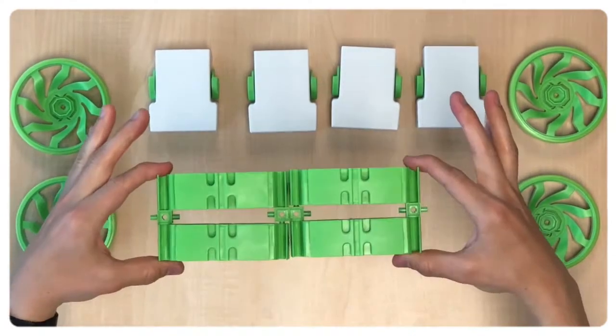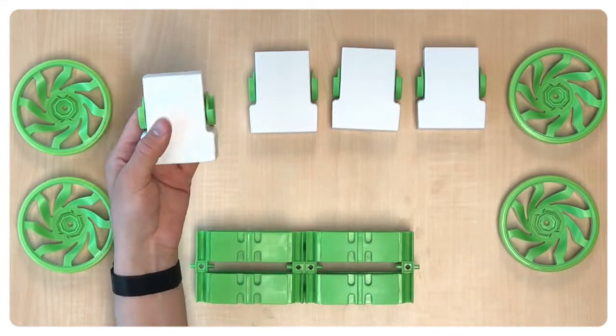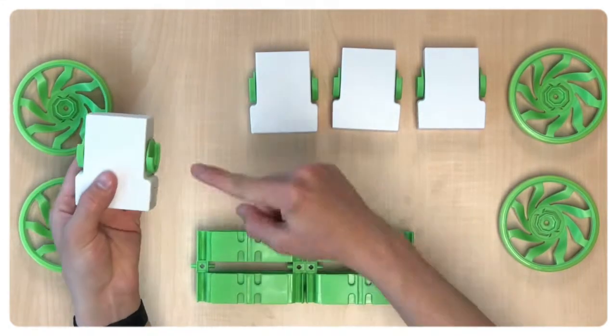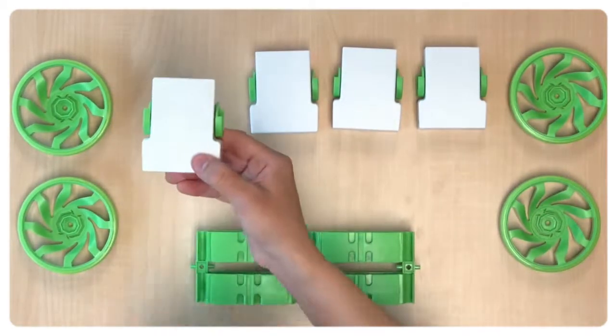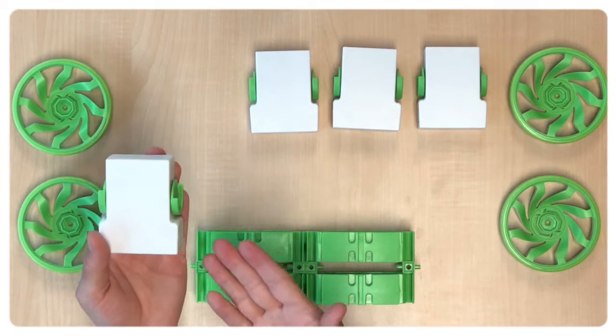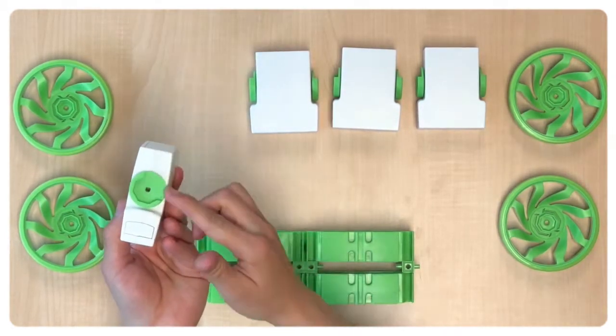Now that the core structure is done we are ready to add the motor modules. To do that the first thing that we need to do is check which side is the motorized side of the module. To do that we gently try to move one of the rotation pins with our hand and see if it moves or not.